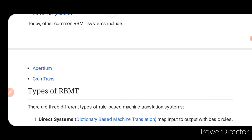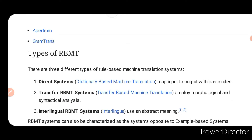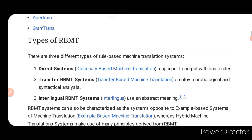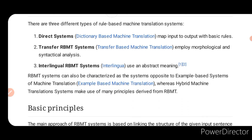Types of RBMT: there are three different types of rule-based machine translation systems. Number one, direct system — dictionary-based machine translation maps input to output with basic rules. Number two, transfer RBMT system — employs morphological and syntactical analysis to transfer one system to another. Number three, interlingual RBMT system — uses an abstract meaning representation. RBMT systems can also be characterized as opposite to example-based machine translation systems.